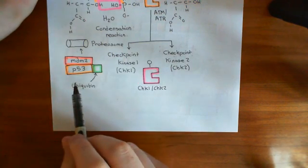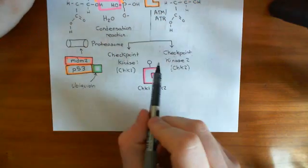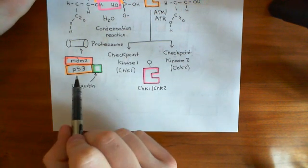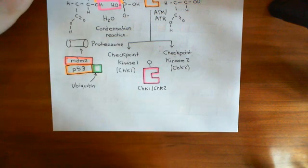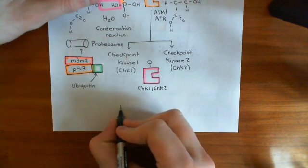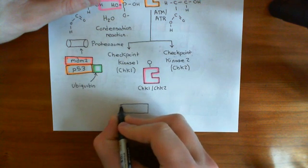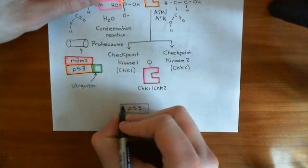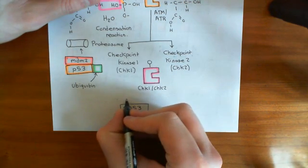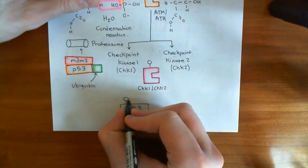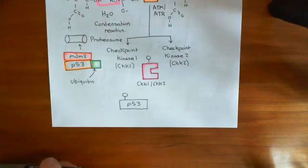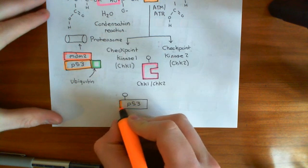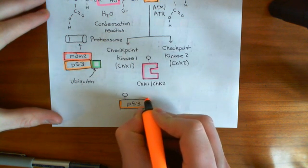So we want to activate the P53. So the way that checkpoint kinase 1 slash checkpoint kinase 2 activates the P53 is it stops it from being able to interact with MDM2. So basically, if this is a piece of P53 which has just been synthesized, what the checkpoint kinase 1 or checkpoint kinase 2 enzyme is going to do is it's going to stick a phosphate group onto the P53 protein. Now, once you have a phosphate group stuck on that P53, MDM2 can no longer bind.